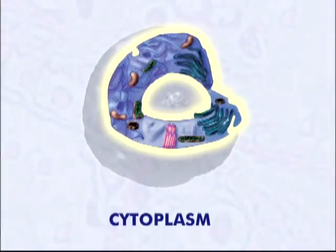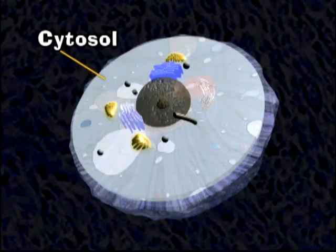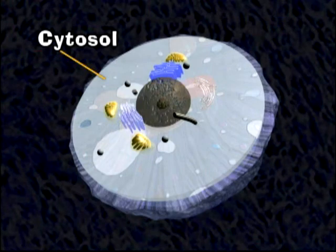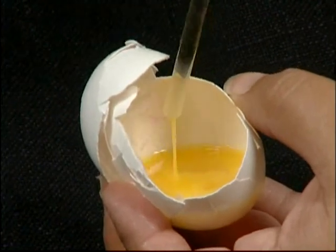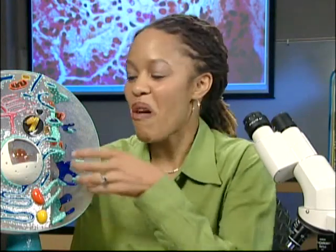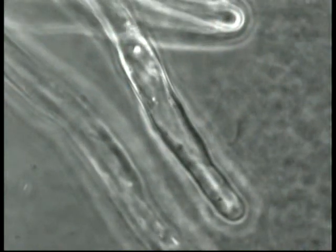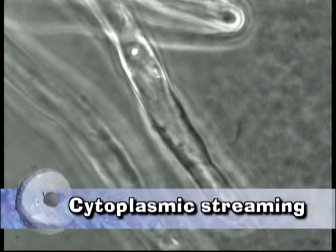Now let's look at the organelles inside the cell membrane. The cytoplasm includes everything inside the cell membrane except the nucleus. Also part of the cytoplasm is the cytosol — a gel-like fluid made up of mostly water, proteins, and some chemicals. Take a look at the inside of this egg; this liquid is like cytosol. Many of the cell's life processes, such as making proteins and dissolving waste, take place in the cytoplasm.